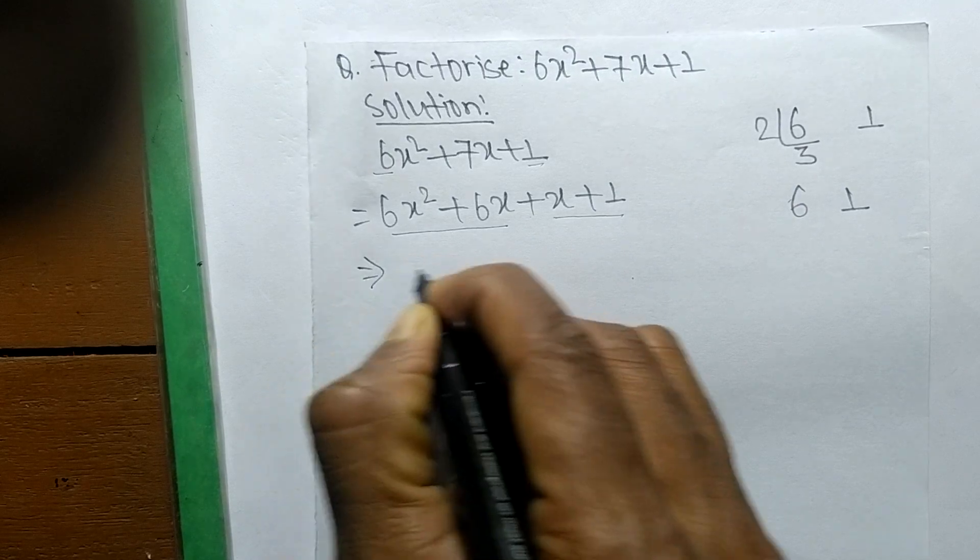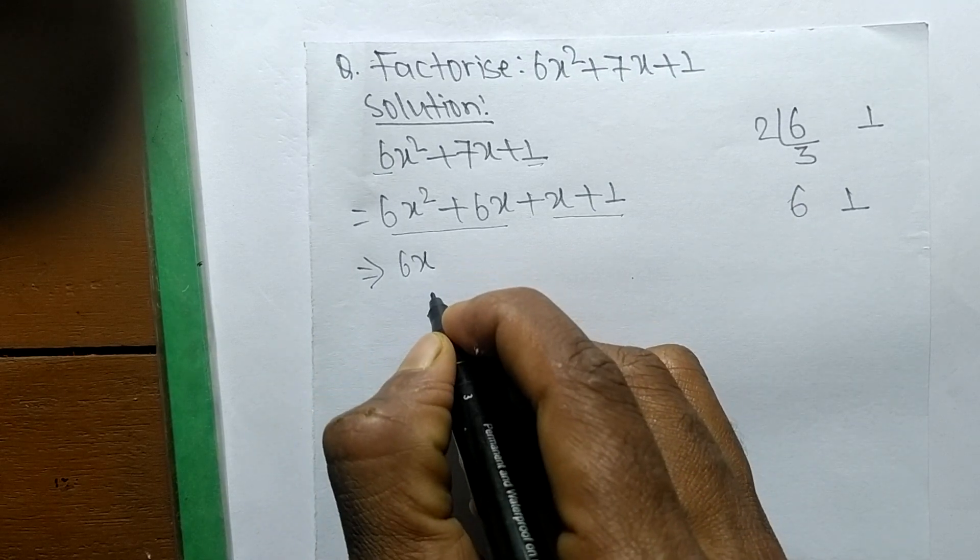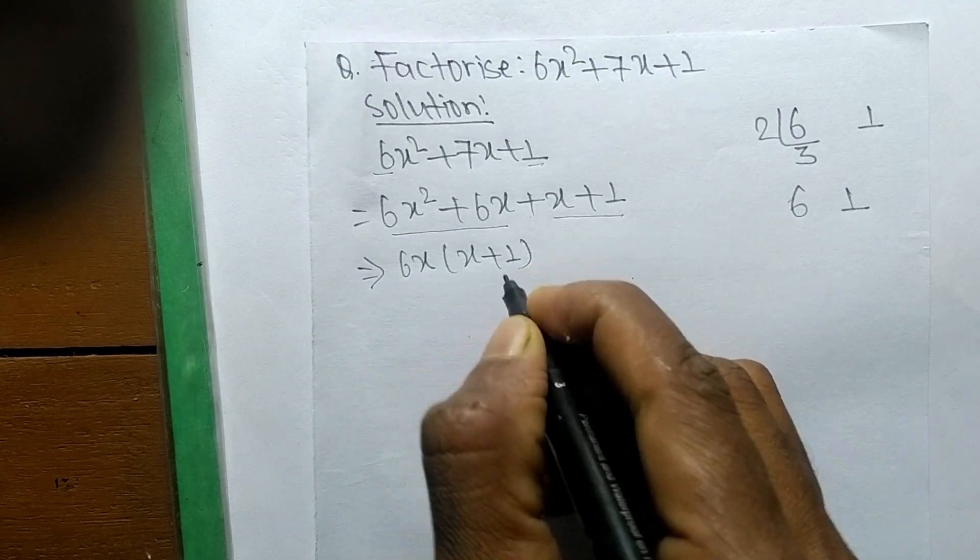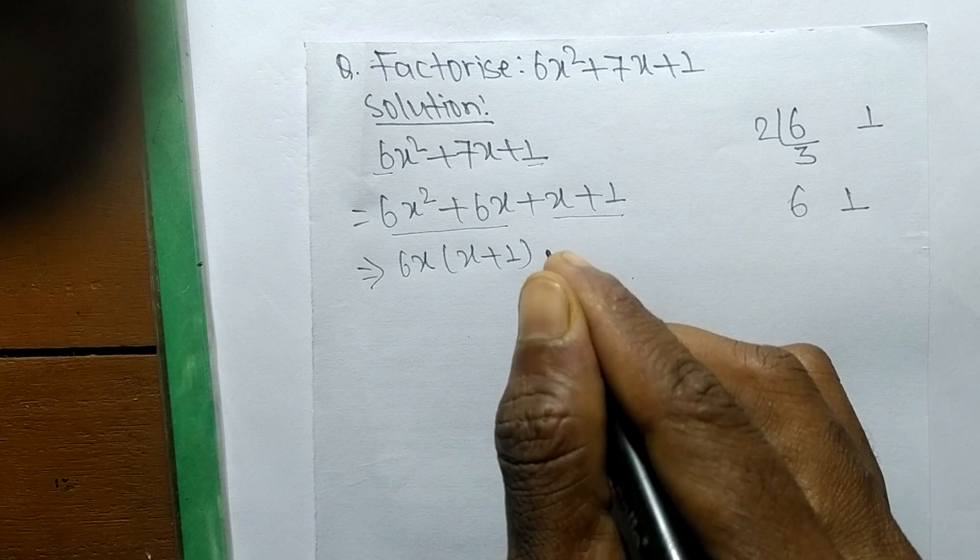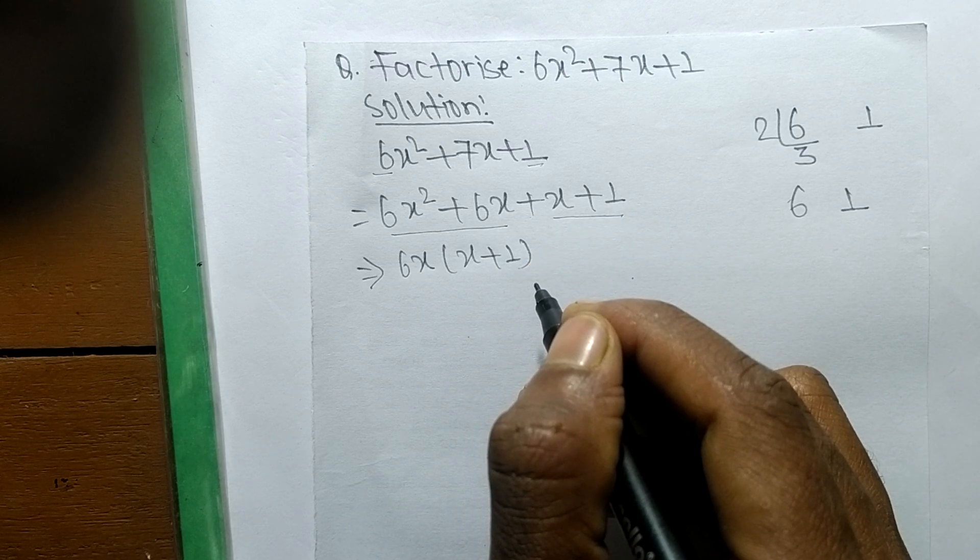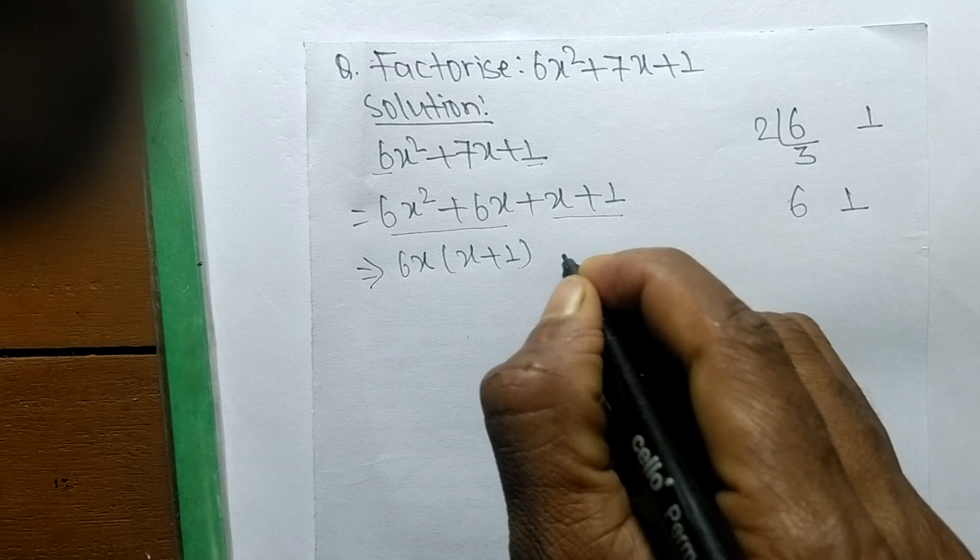In the first pair the common here is 6x, so the remaining is x + 1. In the second pair there is no numbers and alphabets common. When there's nothing common, then in that case the common becomes 1.